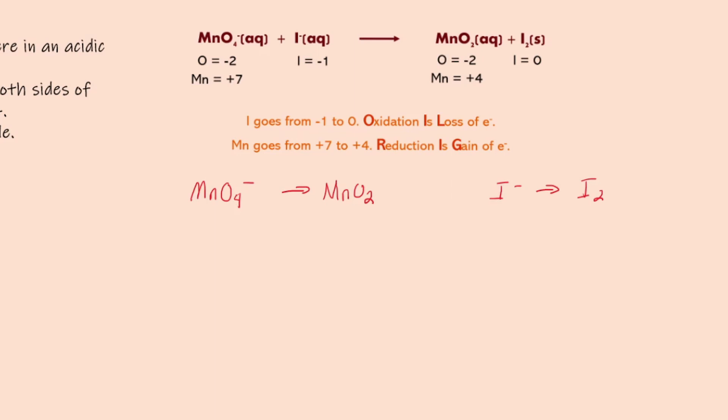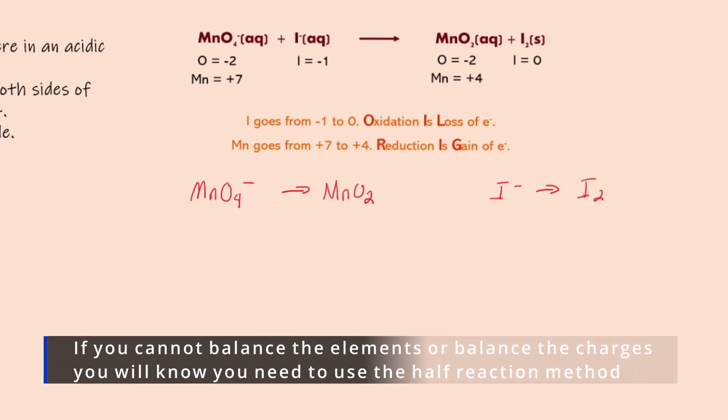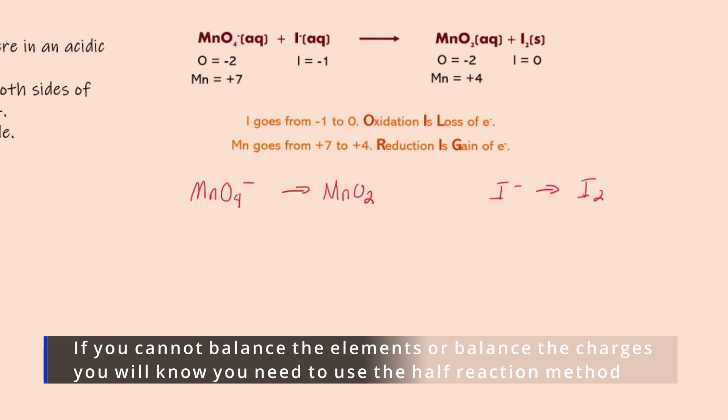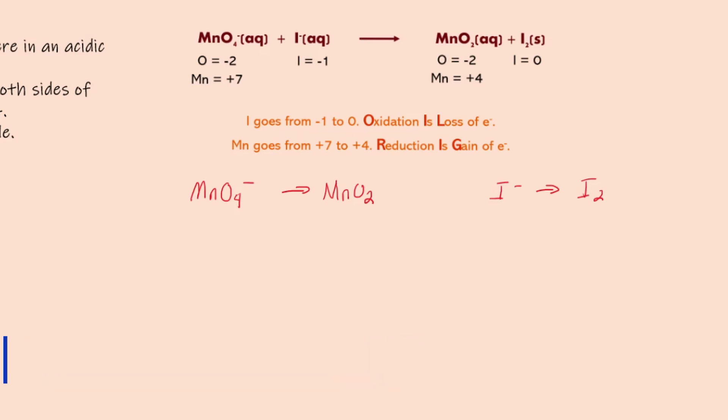Also we ran into an issue here with the oxygen because we've got one manganese four oxygen then we got one manganese two oxygen there's no coefficient that's going to make that balance. As I put a two over here to increase my oxygen I double my manganese and I mean there's just no way to get it to balance so we know that conventional methods are just not going to work in this case so we know we have to use our half reaction method.